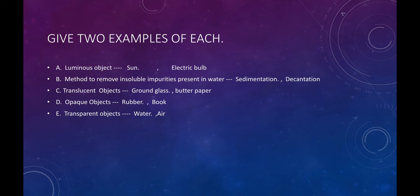Second exercise: give two examples of each. First, luminous objects — write the names of two luminous objects. Our answer is Sun and electric bulb.